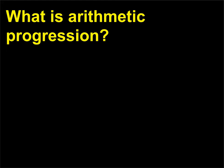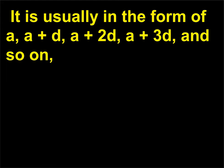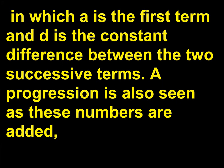What is arithmetic progression? Arithmetic progression is one of the more simple types of series in mathematics. It is usually in the form of a, a+d, a+2d, a+3d, and so on, in which a is the first term and d is the constant difference between the two successive terms. A progression is also seen as these numbers are added.